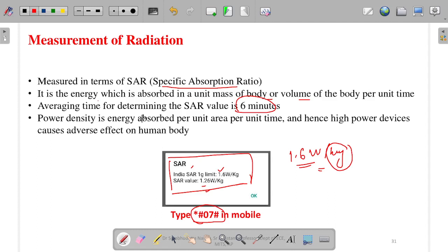If a mobile is used for 6 minutes near the body, the absorbed energy should not be greater than 1.6 watt. Power density is energy absorbed per unit area per unit time, and hence high power devices can cause adverse effects on human body. If your mobile has a very low SAR value, it is very good. If it has a higher SAR value, it is harmful.